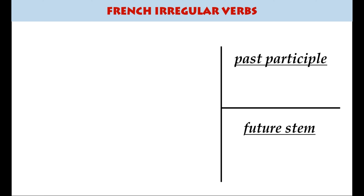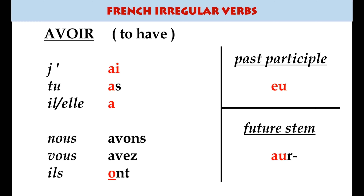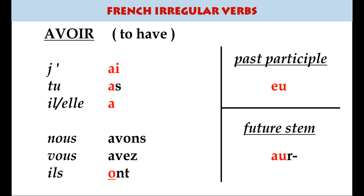In second place for irregularity: avoir. J'ai, tu as, il a, nous avons, vous avez, ils ont. The past participle eu is pronounced like that — j'ai eu, I have had — though you'd often use the imperfect j'avais instead. The future stem is also awkward, with a u: aur-.